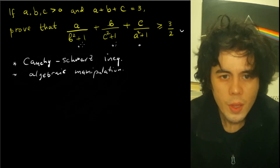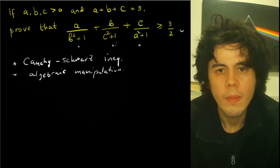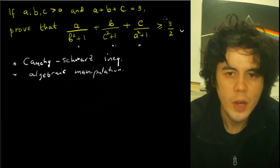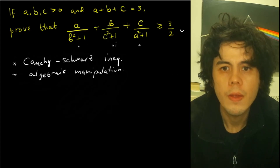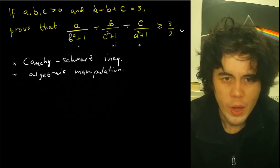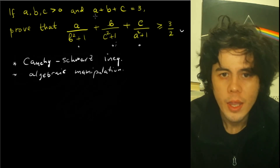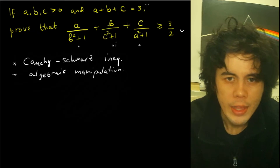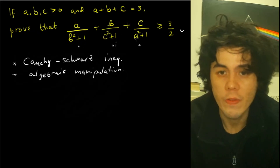Now I will give you the solution, but I suggest you try it by yourself first. If you are given that A plus B plus C is equal to 3, it is very likely that we have to use this equation to solve the inequality.